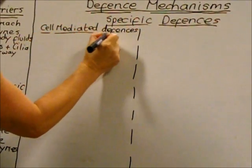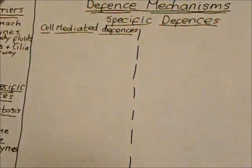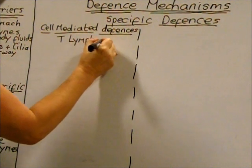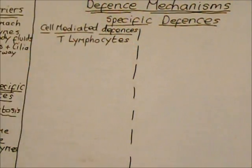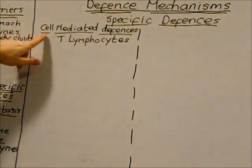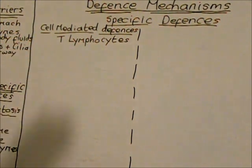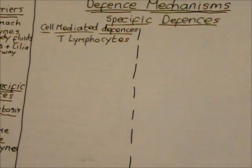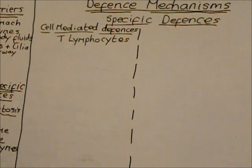The specific defenses have two branches. First, we have the cell-mediated response, which involves special white blood cells called T lymphocytes. It's called the cell-mediated response because it involves the production of types of cells that help in the destruction of a particular pathogen. To set this response off, your T lymphocytes must be exposed to one of your own body cells carrying non-self antigens on its surface.